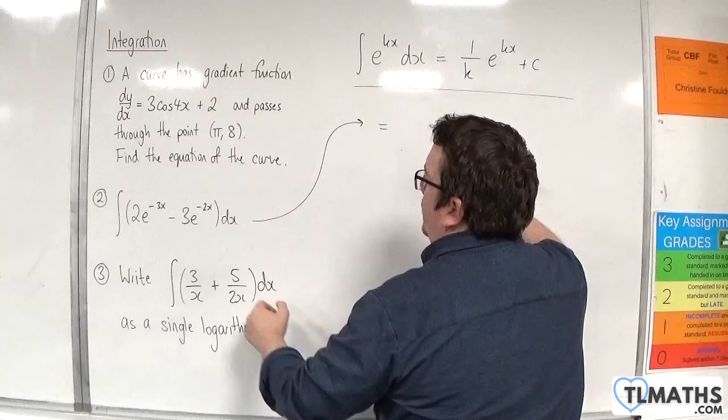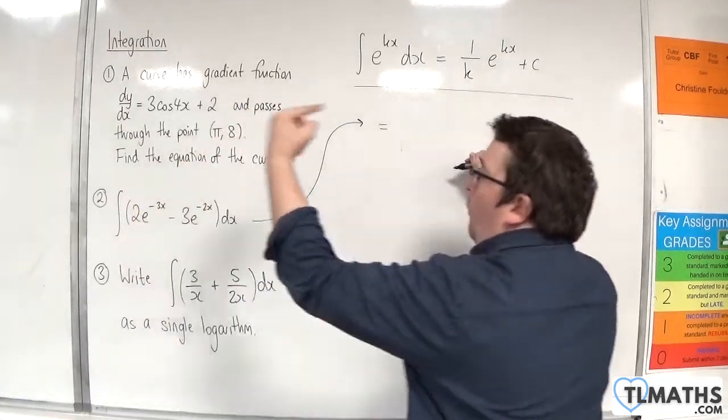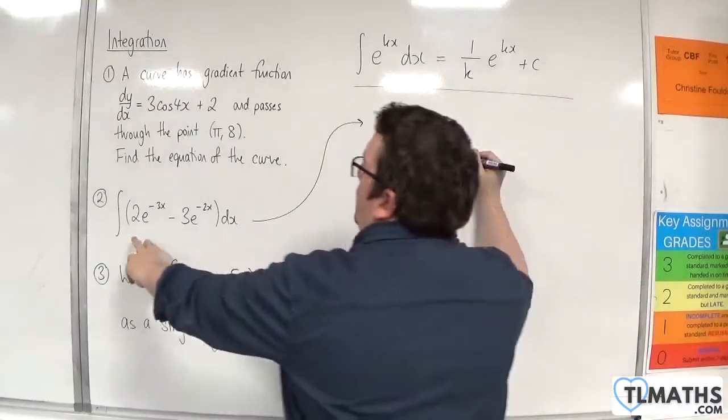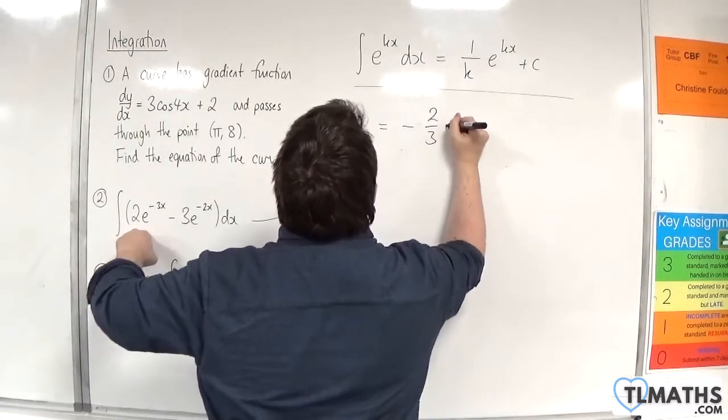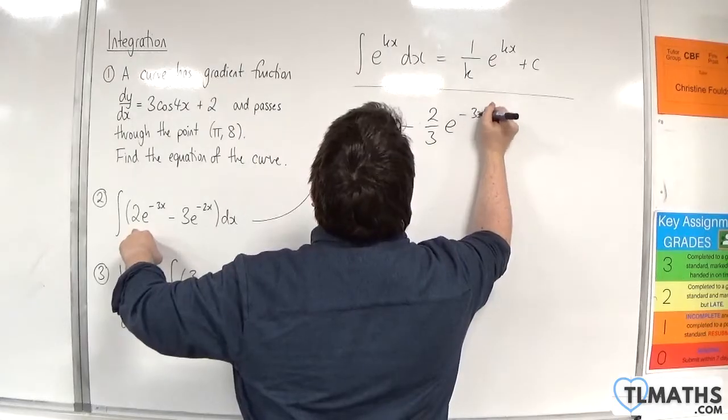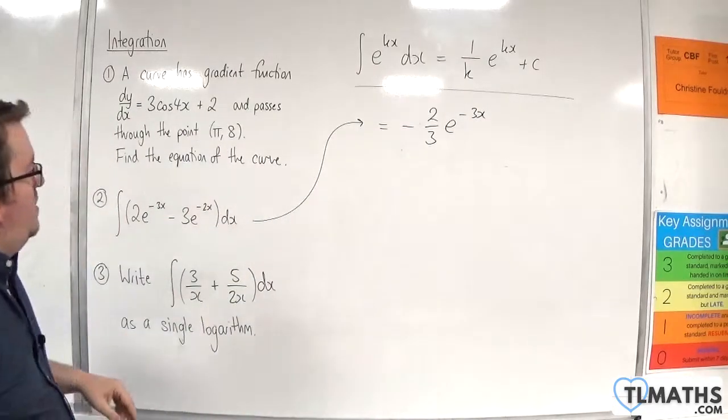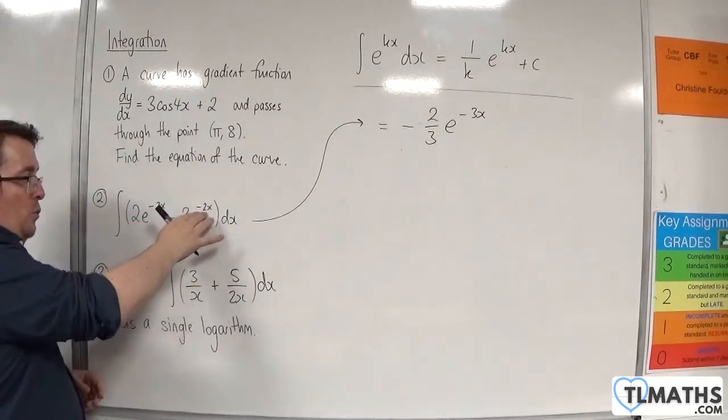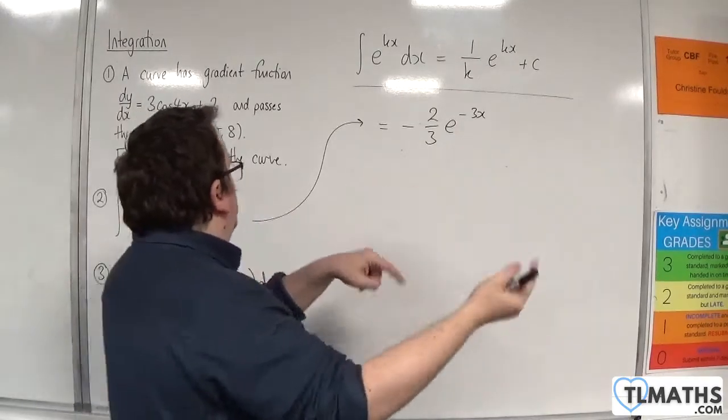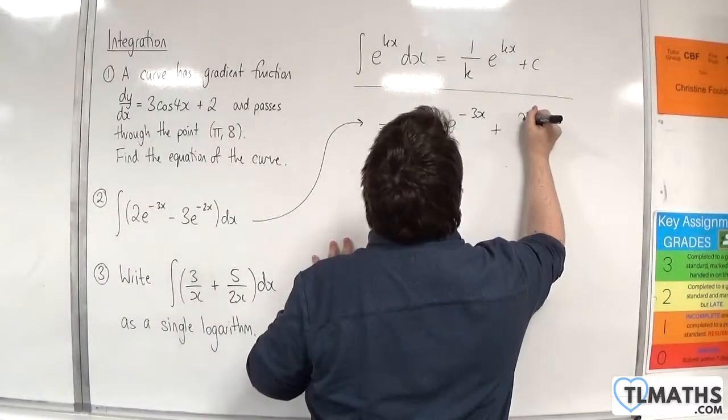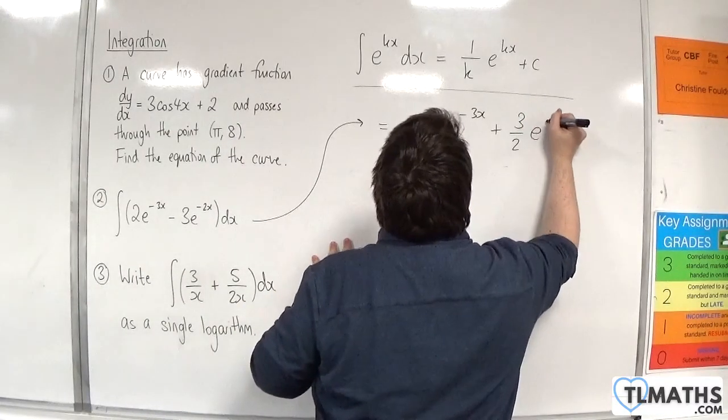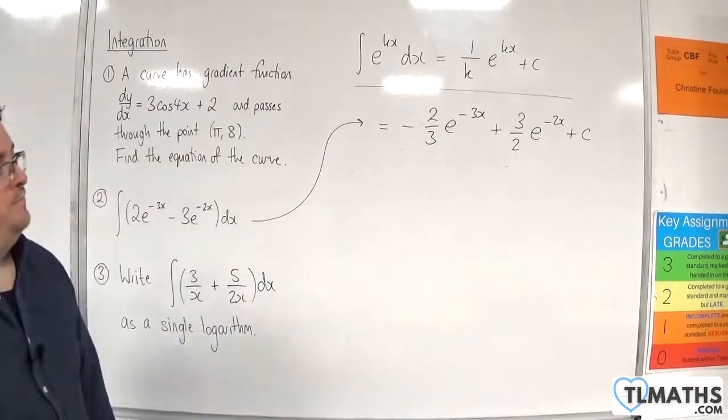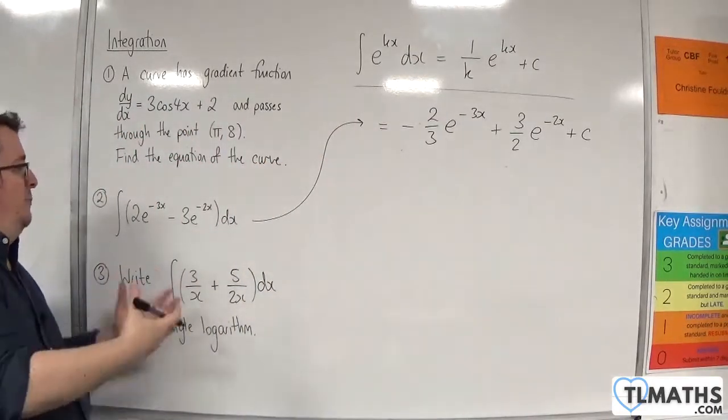So our integral must be 2 lots of 1 over minus 3e to the minus 3x, which is minus 2 thirds e to the minus 3x. Then we've got minus 3 times 1 over minus 2 e to the minus 2x. So minus 3 divided by minus 2 is plus 3 halves e to the minus 2x plus some constant c. And that's my answer for number 2.